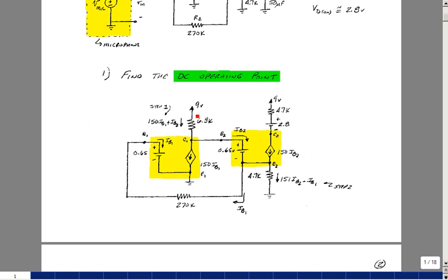This 9 volts has to equal this drop, which is 6.8K times 150 IB1 plus IB2, plus the drop 0.65, and then plus the drop across here, which is 4.7K times 150 IB2 minus IB1. So that's one equation and two unknowns. The equation's on the following page, and we'll look at that in just a second. I need a second equation to solve for those, and there's a possibility right over here, going around this path back to ground.